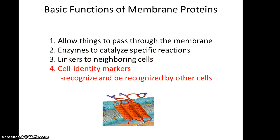Finally, proteins can be important in the role of cell identity markers. They allow your immune system to distinguish cells that are self — that are you — versus cells coming from invaders. These are often the glycoproteins that carry these markers.